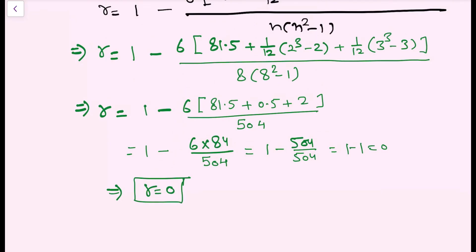This is an example using the tied rank method. Similarly, if ranks are tied in any problem, you can try other examples yourself. The last topic remaining in this module is the regression line, which we will cover in the next video lectures. Then this module will be complete. Thank you for watching.